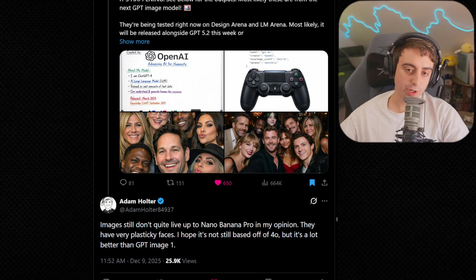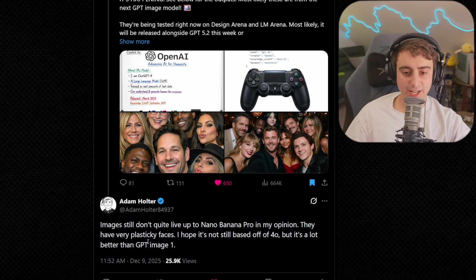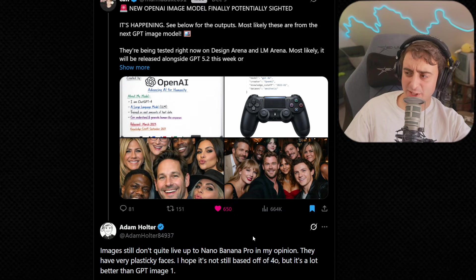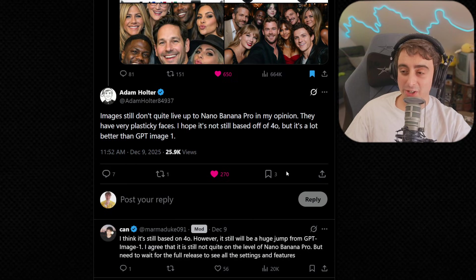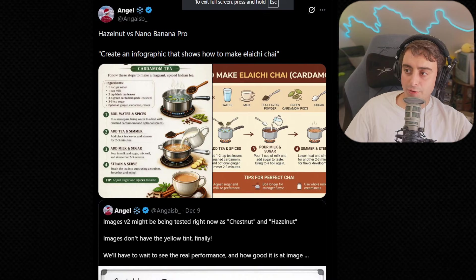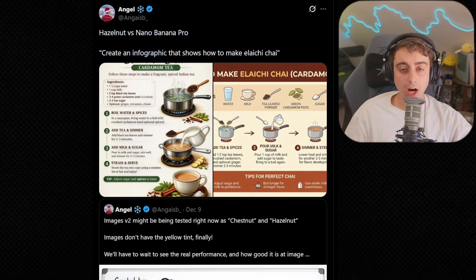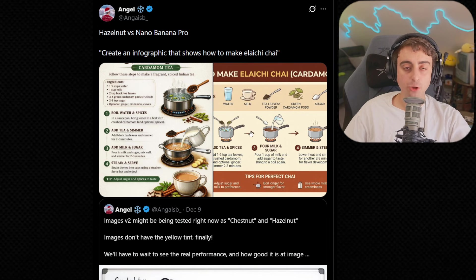Original GPT Image-1 only had two aspect ratio options. Adam Holter, who is a great member of our Discord community in terms of providing the latest and greatest news and testing on latest models, states that the images don't quite live up to Nano Banana Pro, in his opinion. The faces feel a little bit plasticky, and he hopes it's still not based off of 4.0. It is absolutely better than GPT Image-1. I don't think there's any denying that. But as Kan responded here, I am also pretty sure that this model is still based on GPT-4.0. From what I've seen so far, I'm going to agree with Adam Holter. So far, this model does not seem to really live up to Nano Banana Pro.